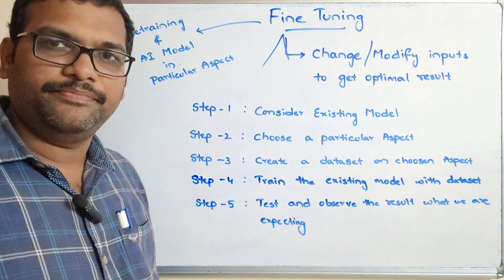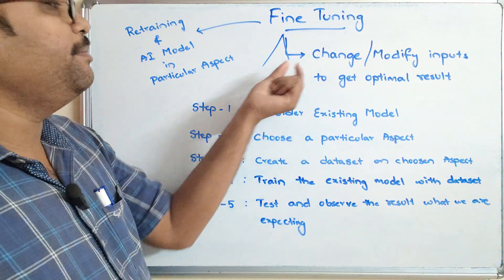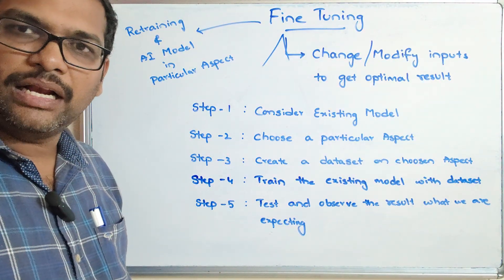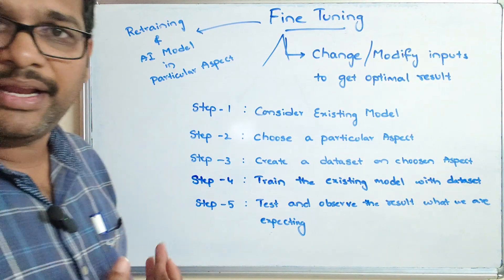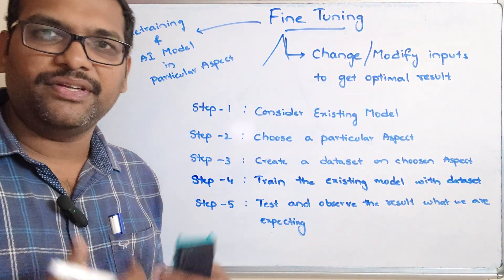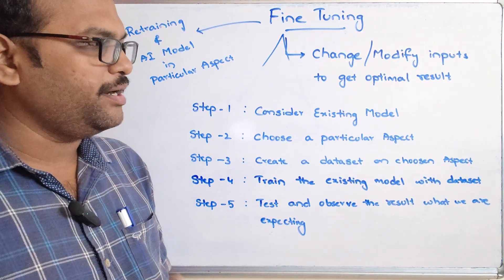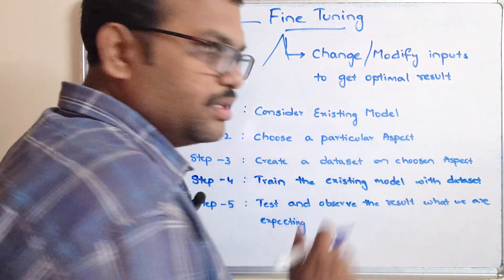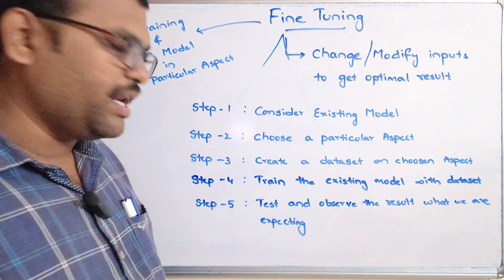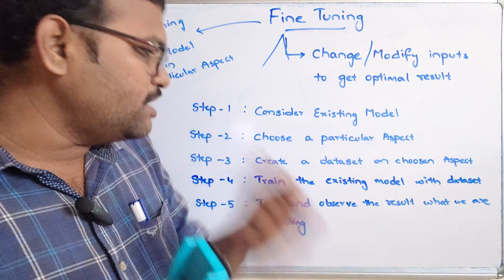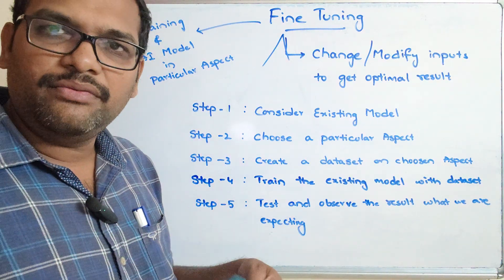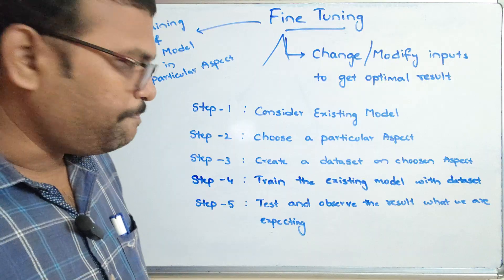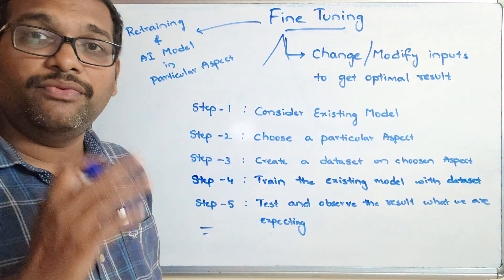This is how fine tuning will be done. We need to consider the existing model - either GPT or DALL-E. We need to consider an aspect, a particular area in which the AI model should be trained. Then we need to create a small dataset on this particular aspect from previous results or anything. We retrain the existing model with that simple dataset, then test and observe the result. If you are not satisfied, refine the training by adding more elements to the dataset and retraining the model.